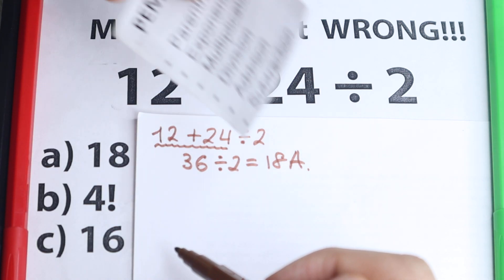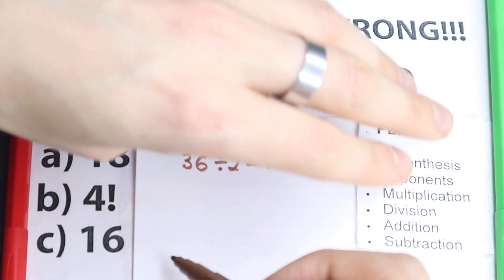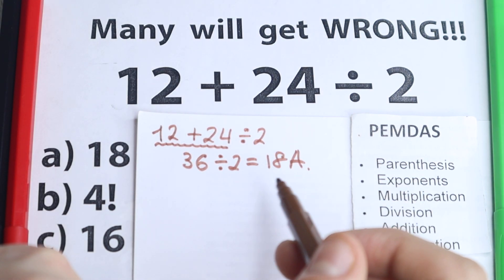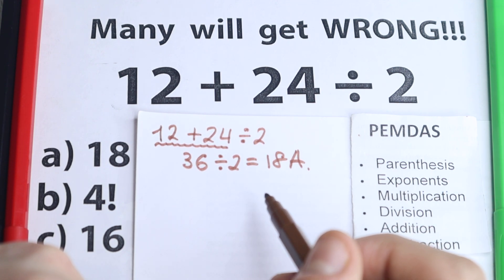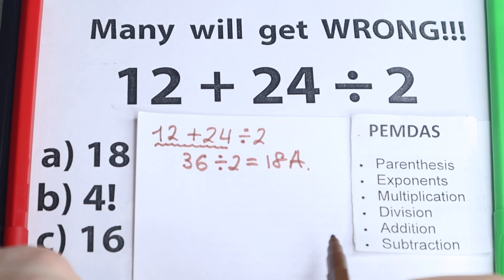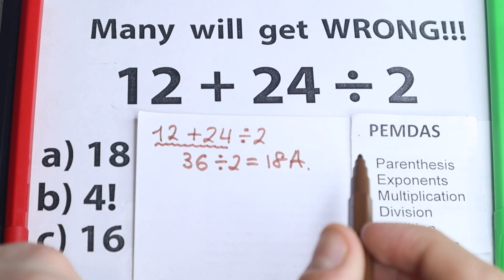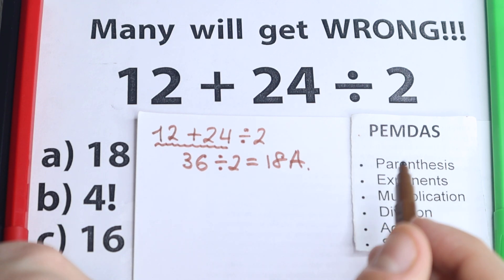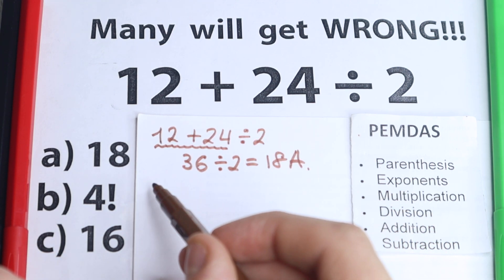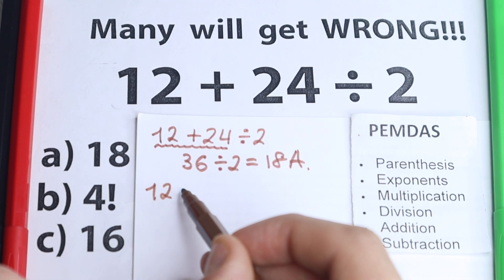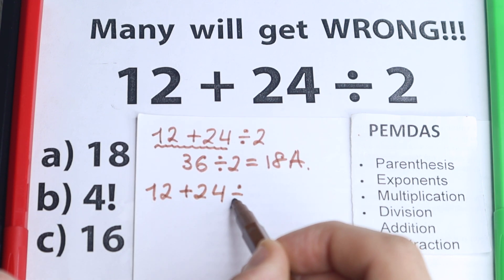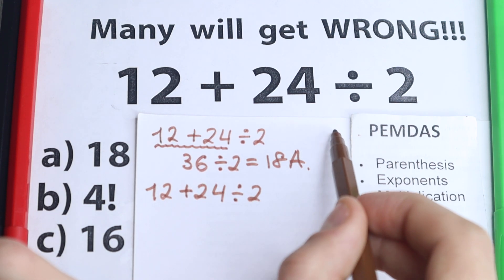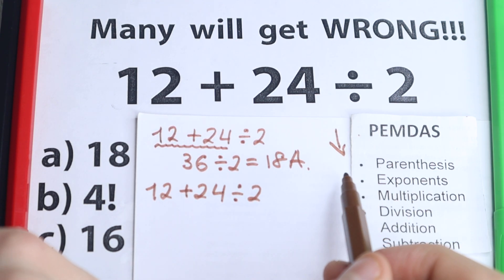Let's solve this correctly according to the correct order of operations. It looks like going left to right we don't care about operations at all, starting with addition then division — but is that correct? Let's look at the proper order of operations. For this question I use the PEMDAS order of operations. This is the most popular order of operations in the world — all internet libraries, math libraries, scientific and graphing calculators work according to PEMDAS. This is the main order of operations.